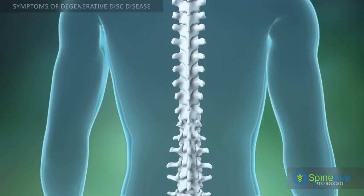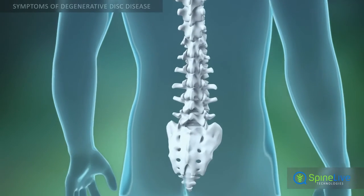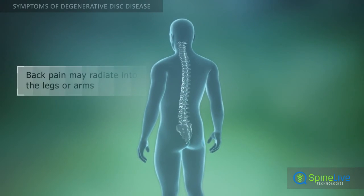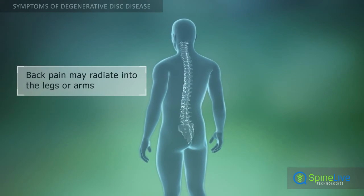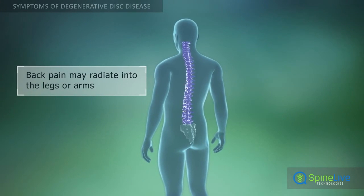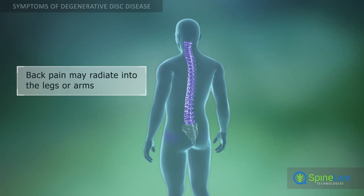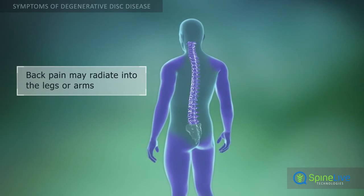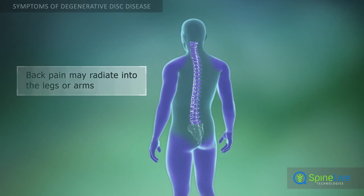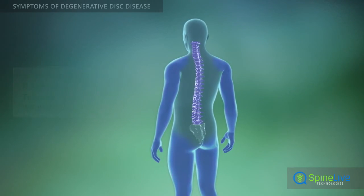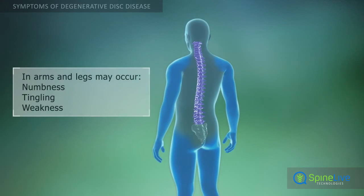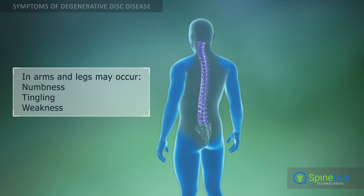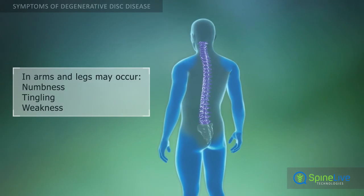Degenerative disc disease often causes no symptoms. When symptoms occur, they typically include back pain, which may radiate into the legs or arms. Weakness, numbness, or tingling in the extremities is also possible.